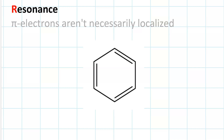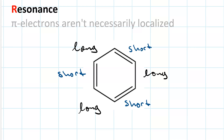One limitation of valence bond theory is the idea that bonds are localized between a pair of atoms, each having a half-filled orbital, and the overlap of those orbitals creates a bond localized between those two atoms. If that were true, then in this benzene molecule, we would see two different carbon-carbon bond lengths — three long bonds and three short bonds. As we know, a single bond is longer and weaker than a double bond, which is shorter and stronger.